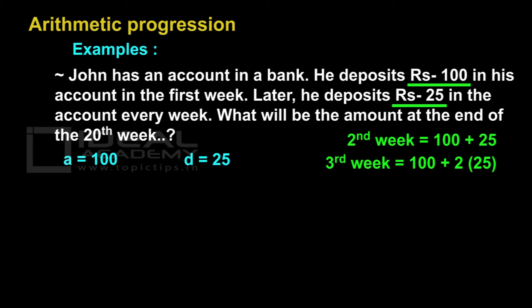From this problem, we can find a general solution for an AP, which is equal to: a — the first term — comma, a plus d, comma, a plus 2d, and so on.